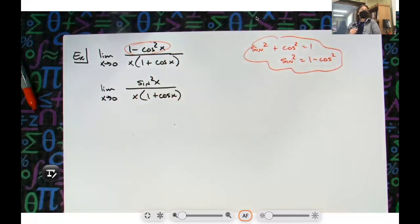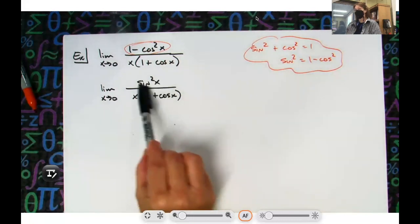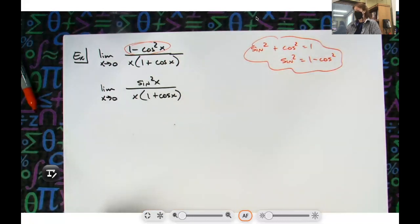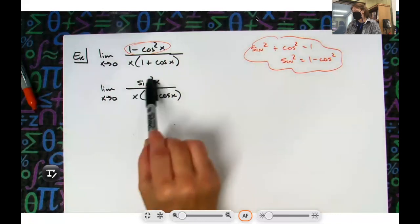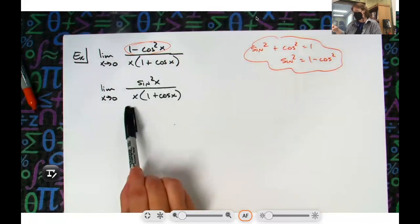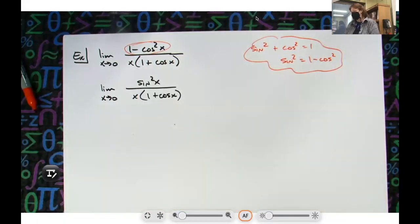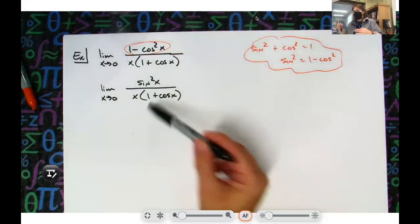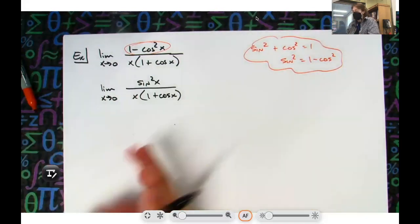All right, now are we getting closer? I've got two sine x's, and I do have an x down here in the bottom. So can I pick one of those sine x's to put over the x? I still have the other sine x that can go over these two things, and I can just multiply them because then I just have my rational function there.